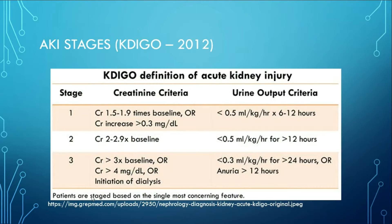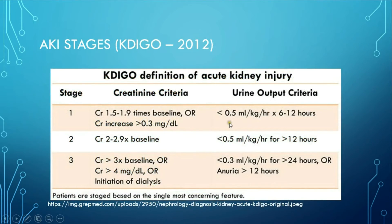The stages of AKI — again, depending on the staging system, the most commonly used one is the KDIGO, with stages 1, 2, and 3. Stage 1 is an increase in serum creatinine 1.5 to almost 2 times the baseline, or an increase of more than 27 micromoles per liter, or urine output less than 0.5 ml per kg per hour. The urine output criteria can be used in the critical care setting where it is easily measured; otherwise, creatinine is easier to follow. Stage 2 is more than 2 to 3 times baseline, and stage 3 is more severe.